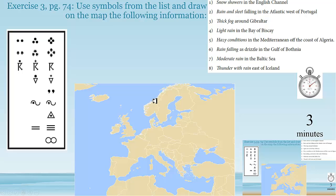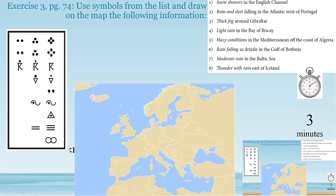Okay great, so here's Exercise 3. You have three minutes — you're going to take the symbols we just learned: rain, snow, thunder, and the rest, and you're going to do a little geography. Here is Europe, and you should know these different areas in Europe. If not, use the internet or whatever else you have available. Take these weather conditions with the right symbol and put them in the right place on the map. Use a pencil — I'm not guaranteed you're going to get it correct the first time. I will give you the answers in three minutes.